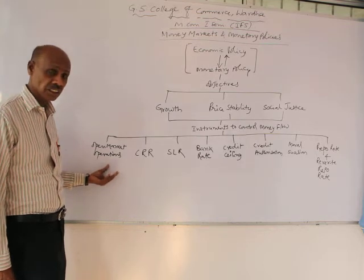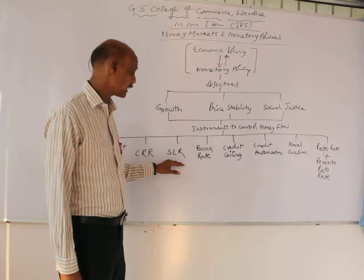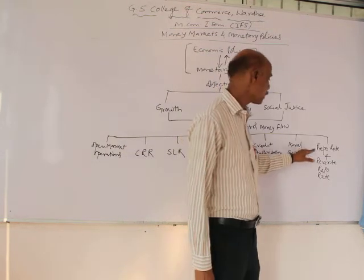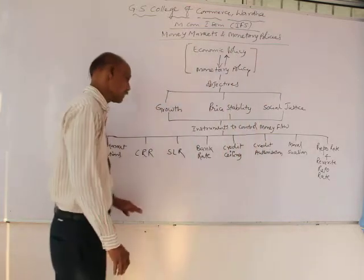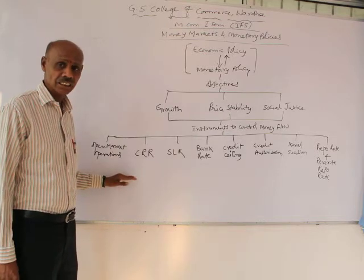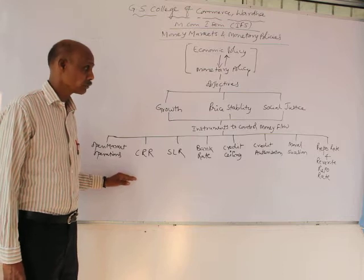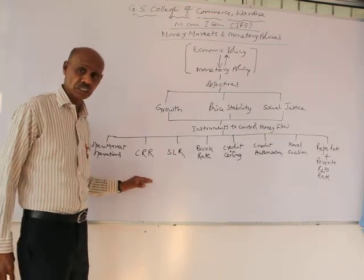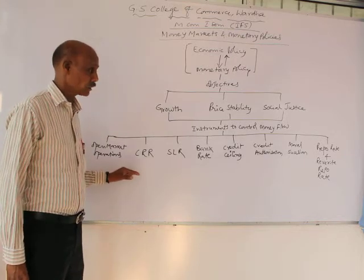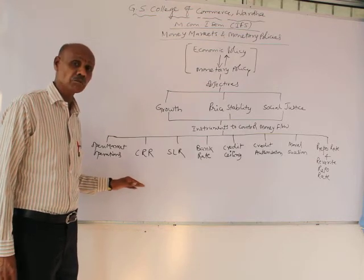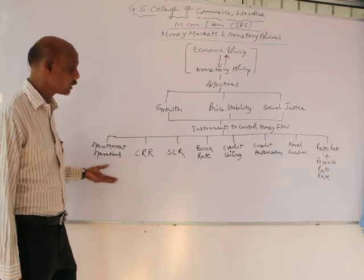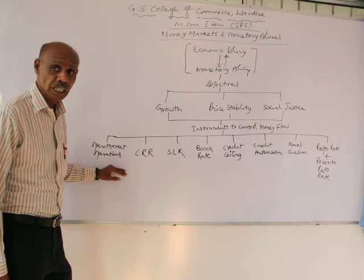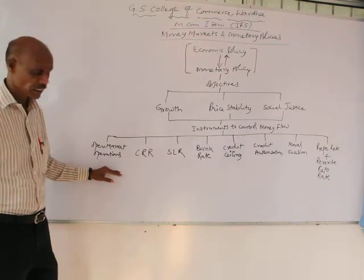The instruments or methodologies through which the monetary policy is going to be controlled include: open market operations, cash reserve ratio, statutory liquidity ratio, bank rate, credit ceiling, credit authorization, moral suasion, repo rate, and reverse repo rate. These are the various items through which the Reserve Bank of India controls the flow of money and resources within the country. Apart from that, from time to time, suggestions received from the Government of India lead to additional temporary or time-related practices by the RBI. These instruments are continuously operated by the Reserve Bank of India as per the situation demanded.